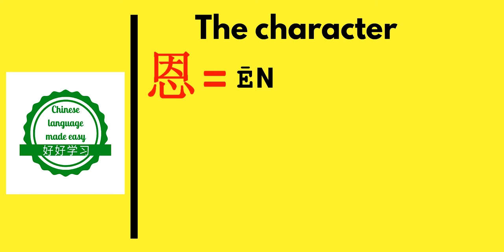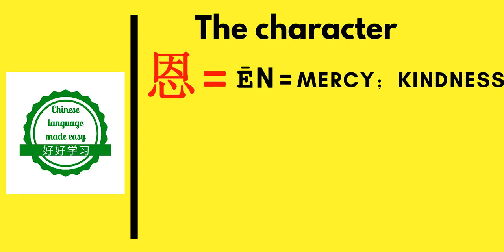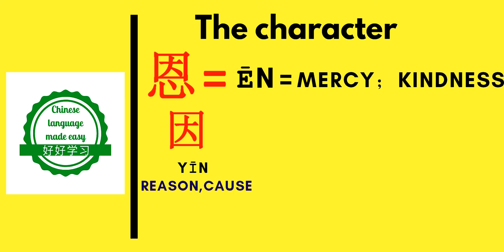The next character is 恩 (ēn), which means 'mercy' or 'kindness.' It is made of two components: the first is 因 (yīn), meaning 'reason' or 'cause,' and the second is 心 (xīn), meaning 'heart.' When you trace the history of this character back to the jiǎgǔwén — the oracle bone inscriptions — those were the bones of ox scapulas and turtle shells upon which Chinese people would write characters, dating back to the Shang dynasty, the actual start of Chinese character writing.